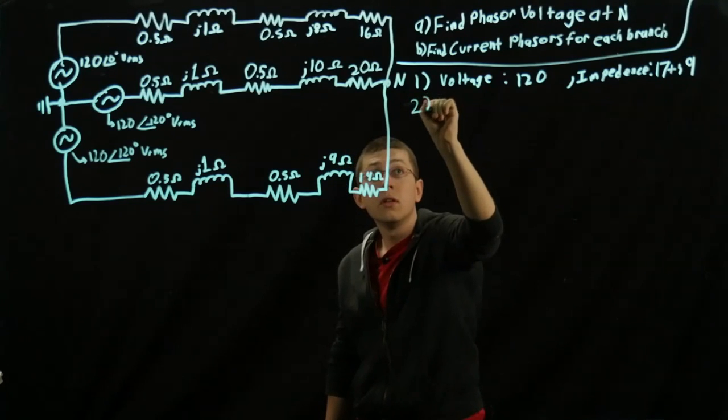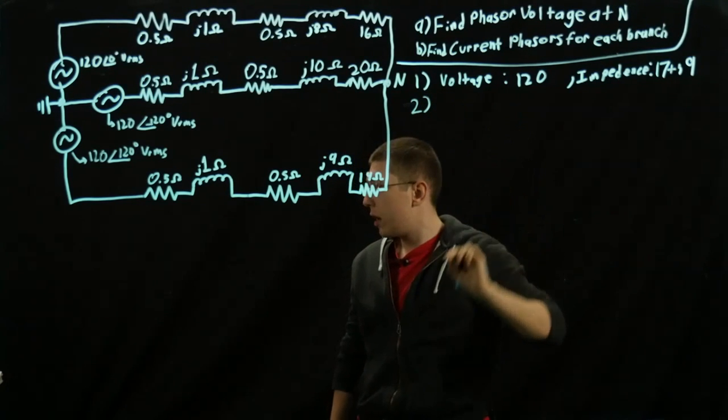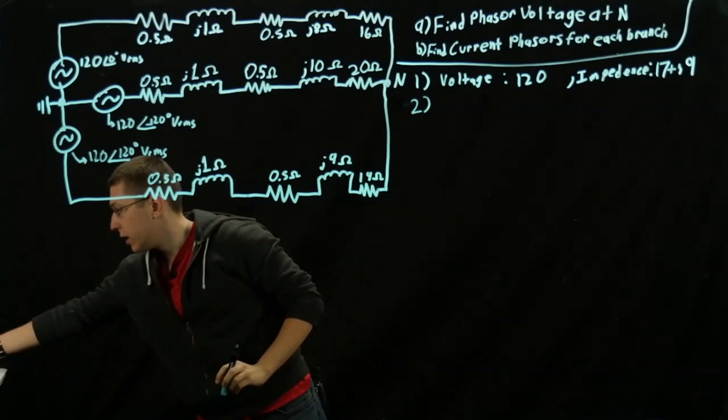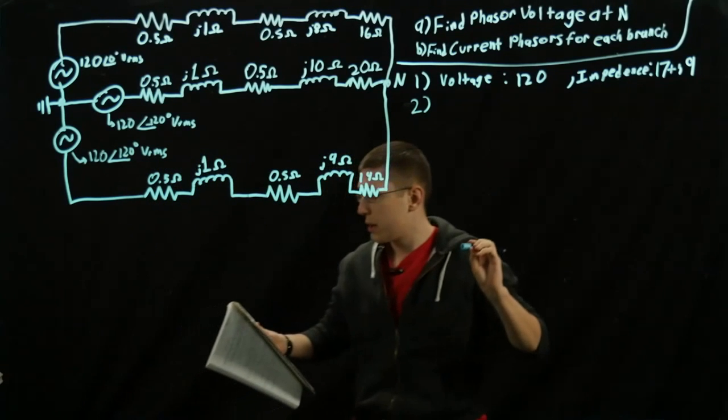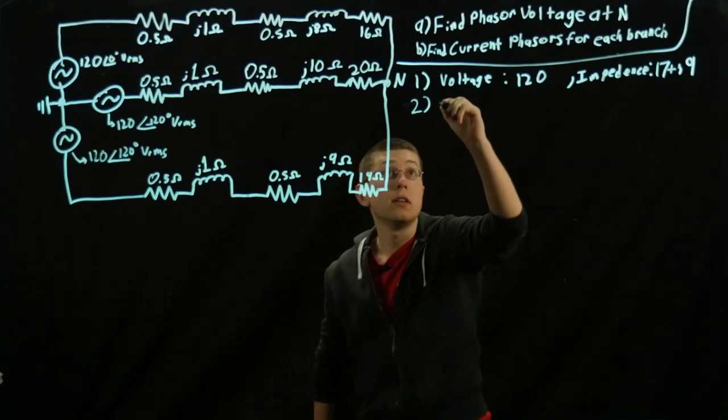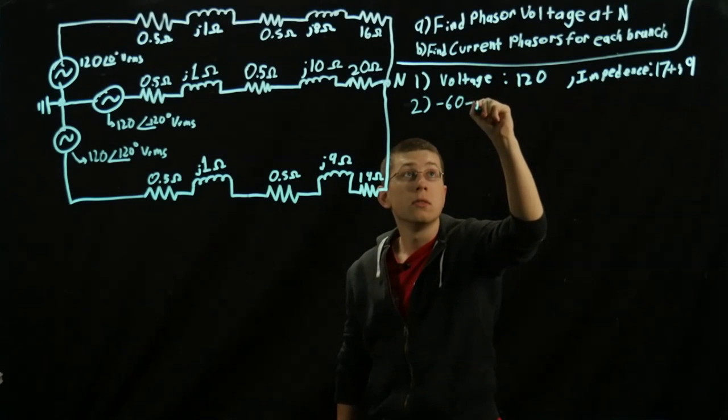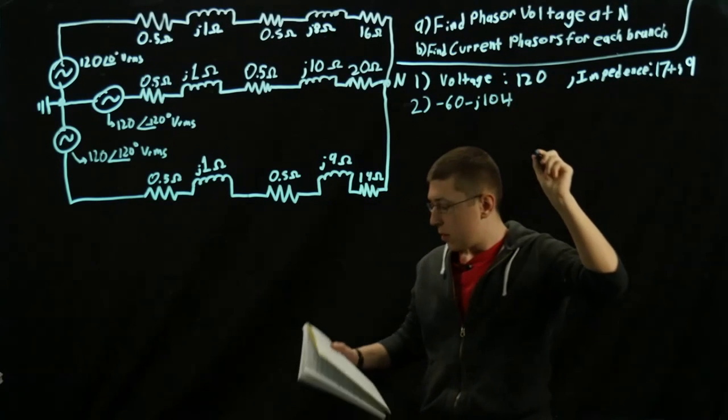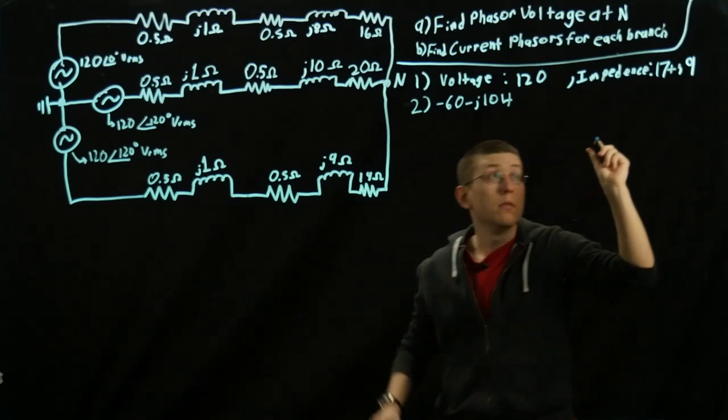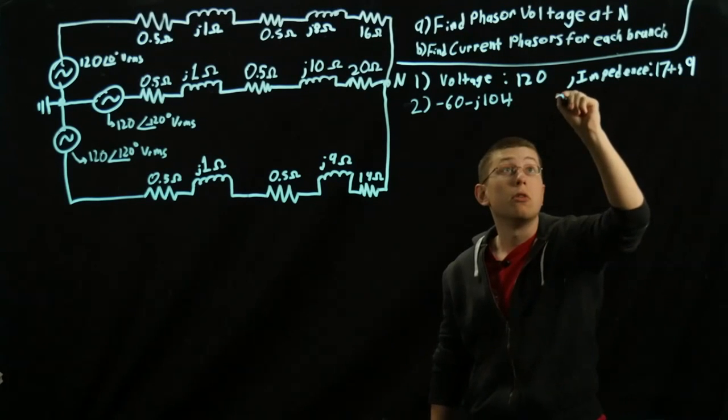For two, after we do our conversion using R sine theta and R cosine theta, we get negative 60 minus J104 volts. And we get an impedance of 21 plus J11 ohms.